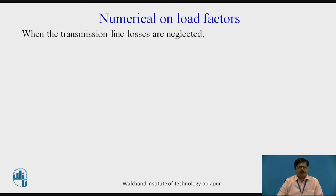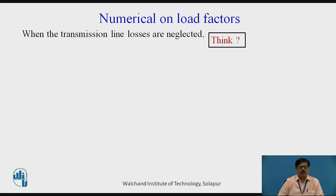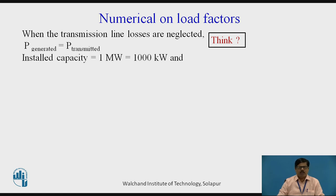Now, as we have seen in the problem, it is given that we neglect transmission line losses. So let us pause and think: when we neglect the transmission line losses, whatever power is generated will be equal to the power transmitted to the consumer. So power generated equals power transmitted when transmission line losses are neglected. Install capacity, as seen earlier, is equal to 1 MW, that is equal to 1000 KW.